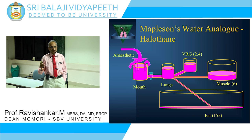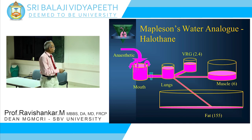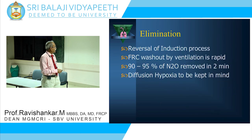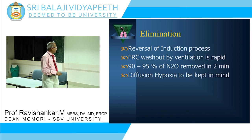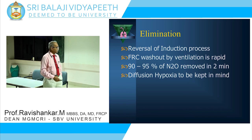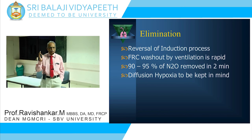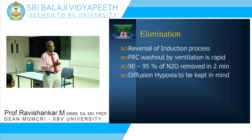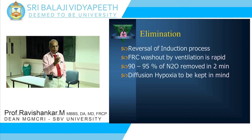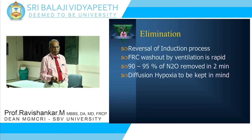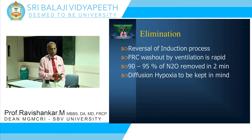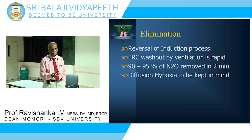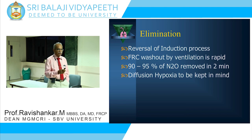Elimination is a reversal of the induction process. FRC washout by ventilation is rapid — 90 to 95% of nitrous oxide is removed in two minutes. When you allow the patient to breathe spontaneously after nitrous oxide, diffusion hypoxia must be kept in mind. There is fast movement of nitrous oxide from the blood back into the alveoli, raising nitrous oxide concentration and dropping oxygen concentration, leading to hypoxia if additional oxygen is not administered.